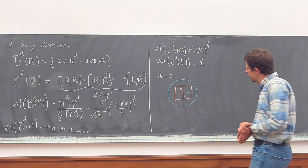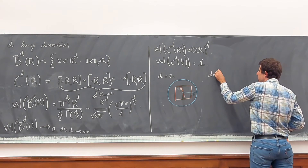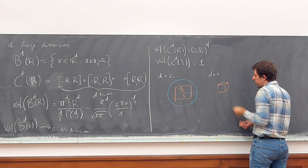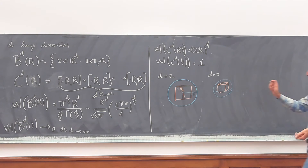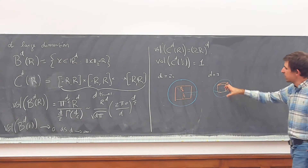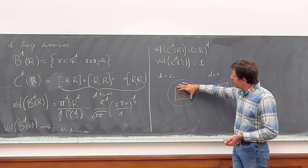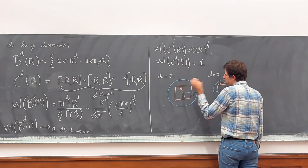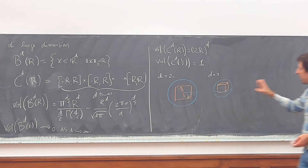For d equals 3, the cube is still inside the sphere — the furthest point is at sqrt(3)/2, still smaller than one. But in general, the diameter of the cube of side length 1 is sqrt(d) by Pythagoras. So as soon as d equals 4, the cube starts touching the sphere.